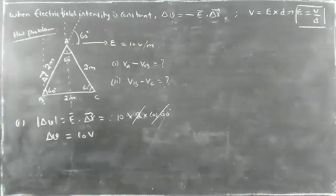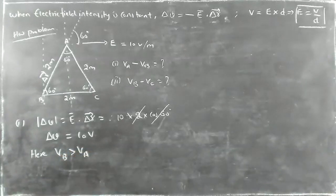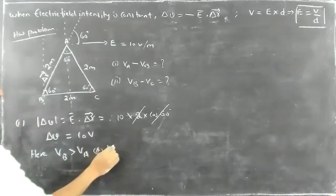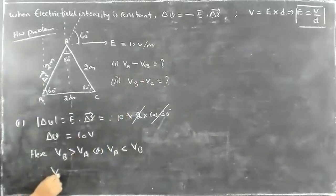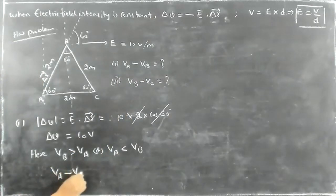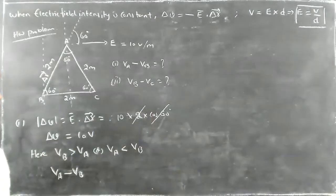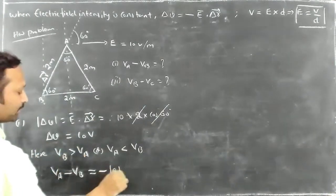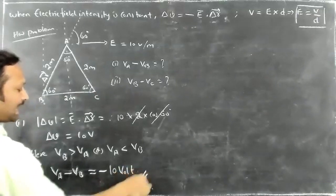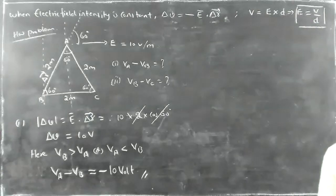Now, potential at B is greater than potential at A. Or else we can say that potential at A is less than potential at B. And then negative side, the problem is negative. What is the change in potential value? 10. So, what is the answer here for the first one? Minus 10 volt.